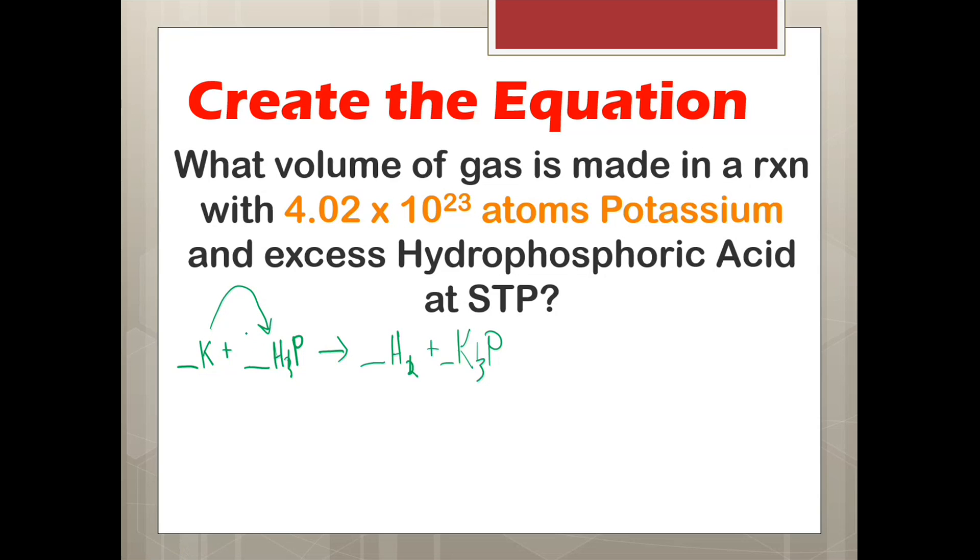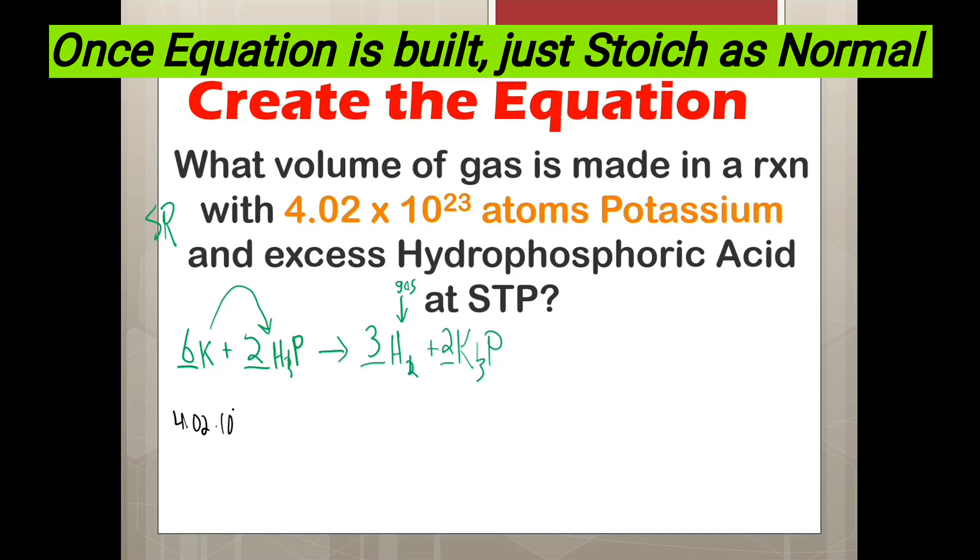And then we just balance this out by putting a two here, a three here, a two here, getting our phosphoruses, and finally six potassiums at the beginning to find out the volume of gas at STP. The gas made in this case is H2, as H2 is the only gas here. We start with the whole 4.02 times 10 to the 23rd potassium, atoms of K. That is our known value. Now what I'm going to do is I'm going to change the atoms of K. I'm going to bring that down like I always do. And I'm going to change this to moles of K, because remember, we always want to get to the mole.